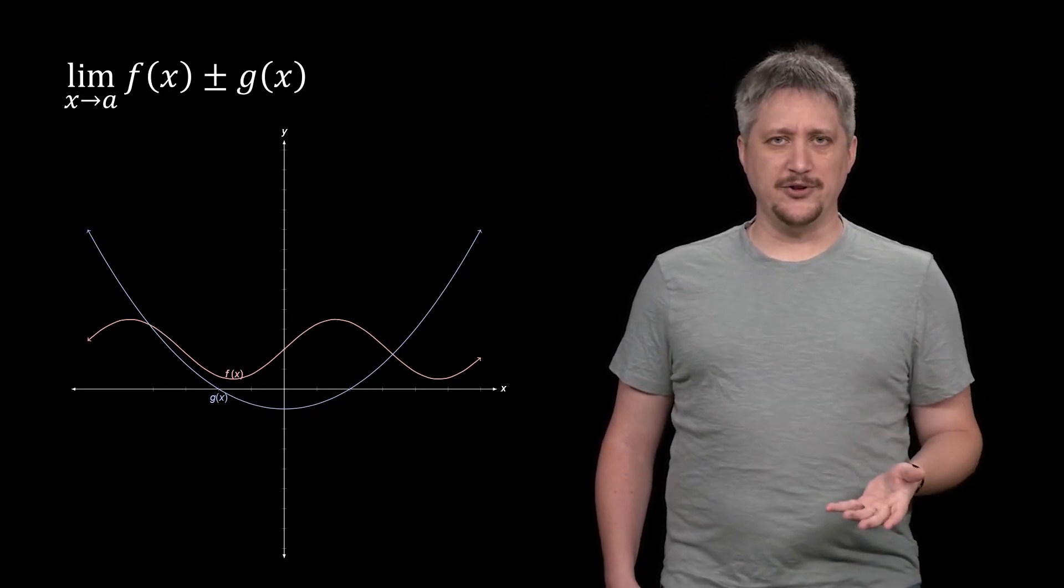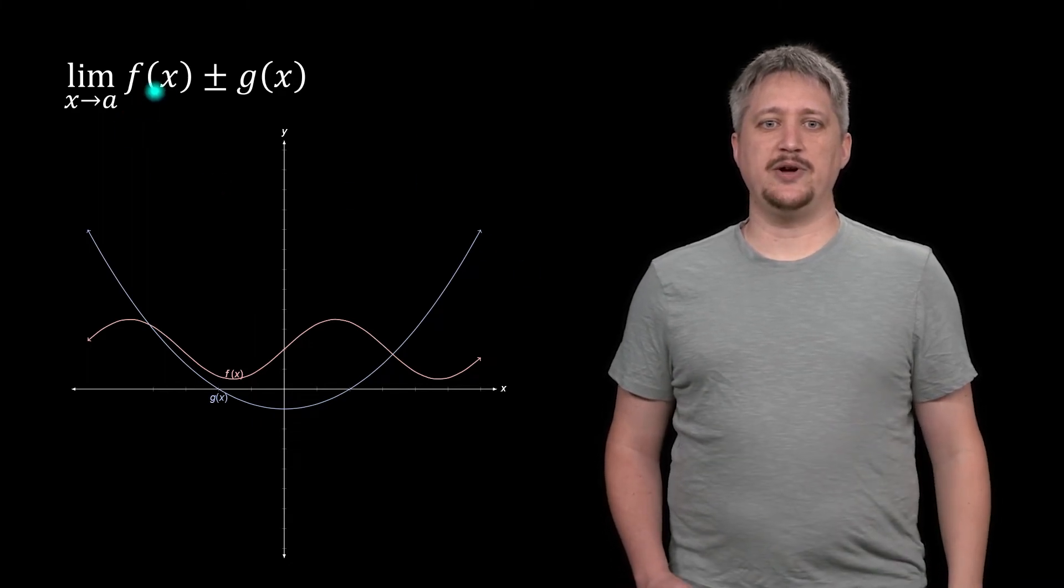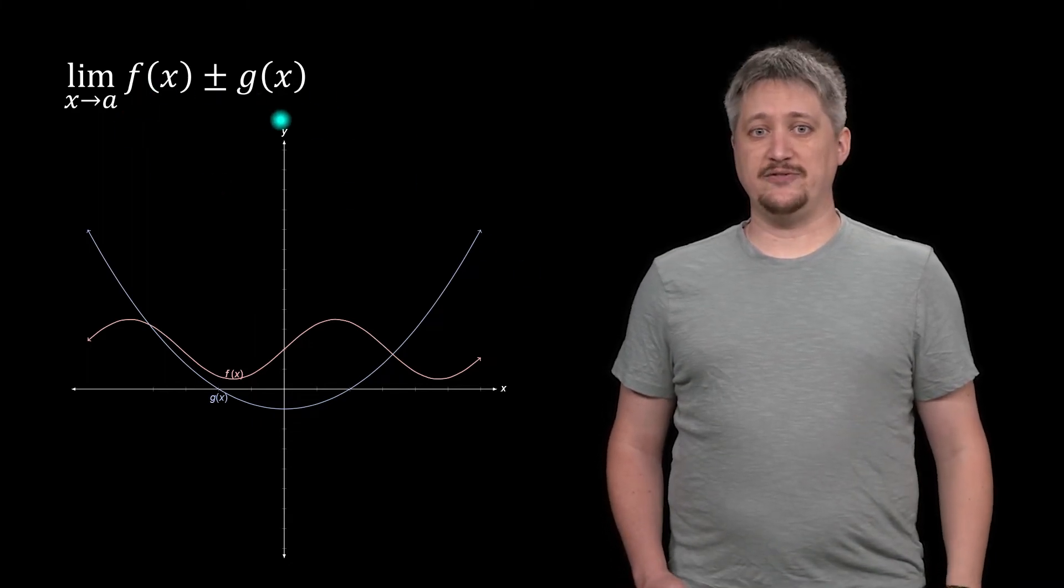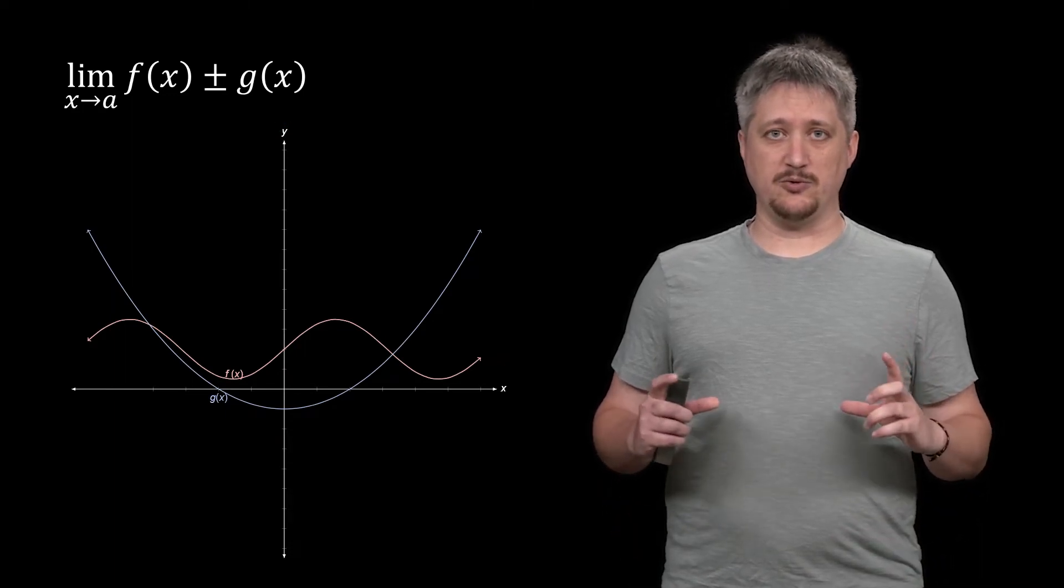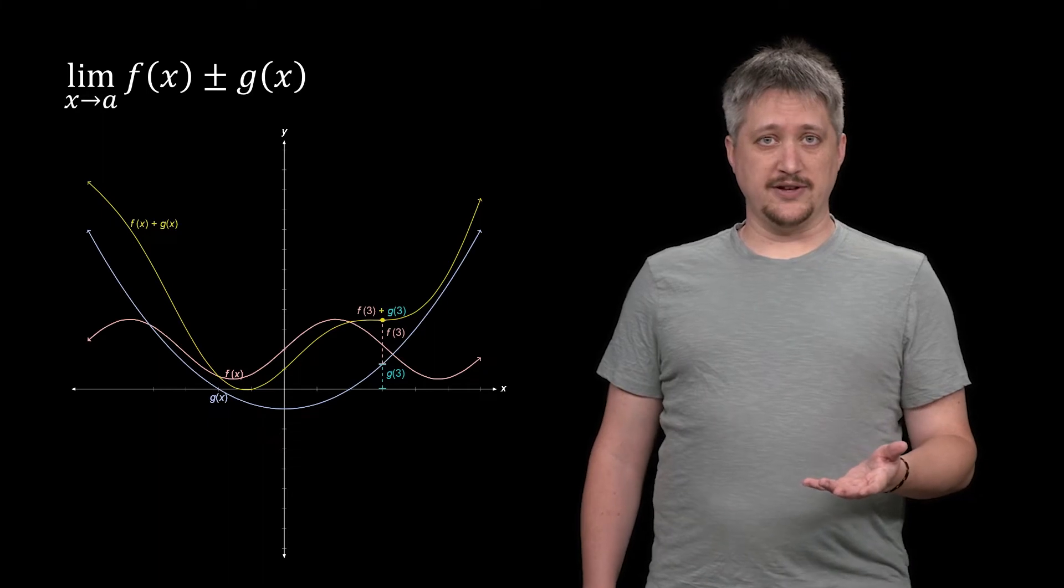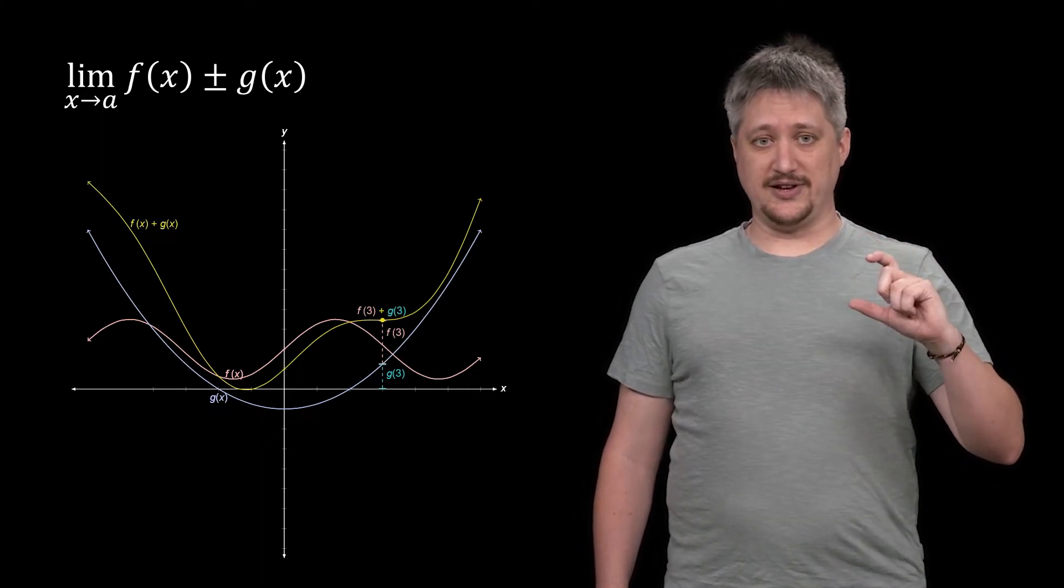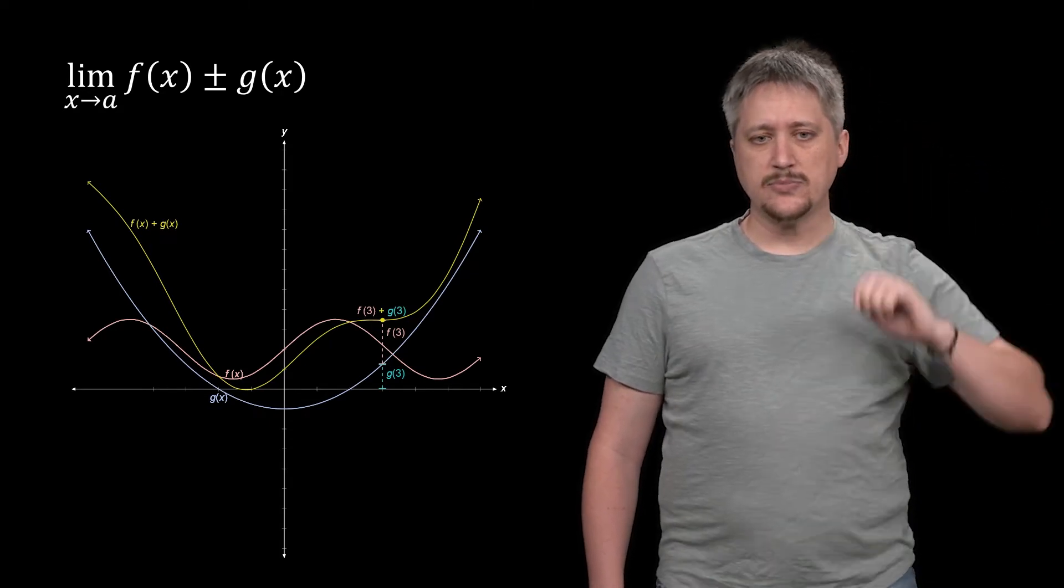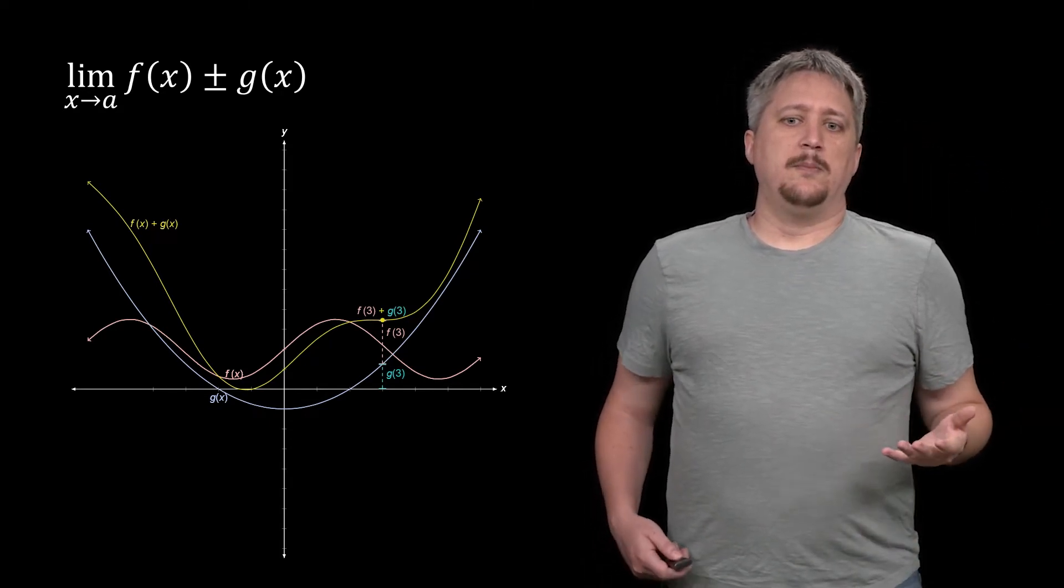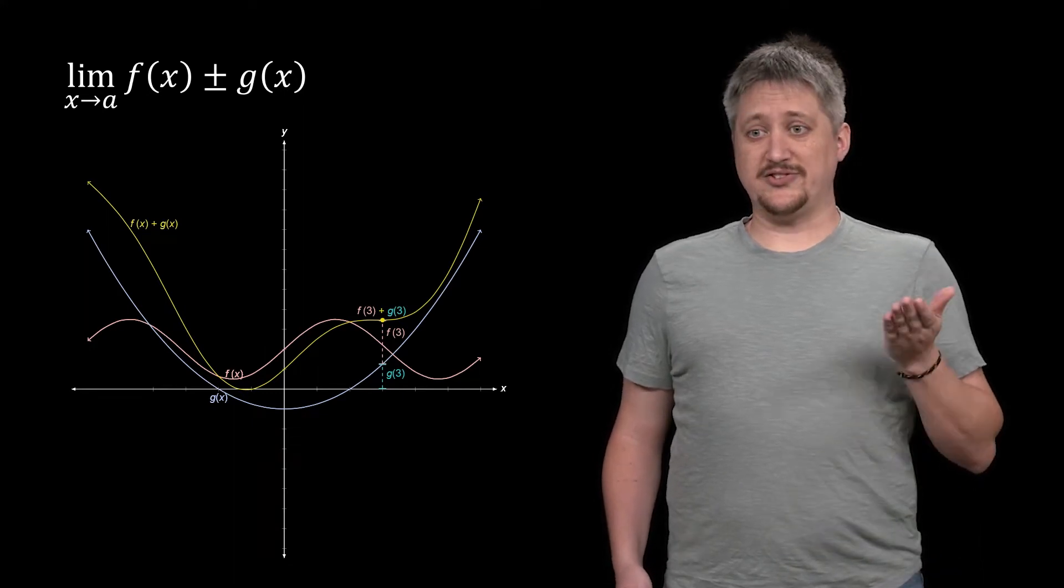We'll start with some function f, another function g, and we want to know if we are taking the limit of each of these things added together versus the limit of each of them individually added or subtracted together. So it would be helpful to know what the sum function looks like, because this limit is applying to f(x) plus or minus g(x) as one whole unit. So this yellow curve is adding those two functions together.